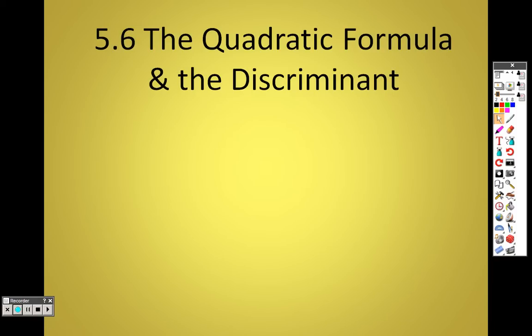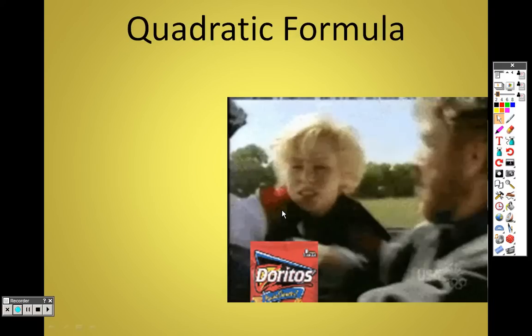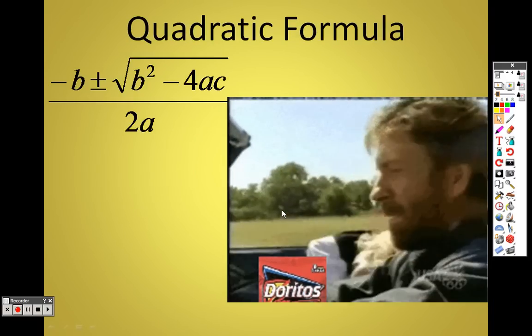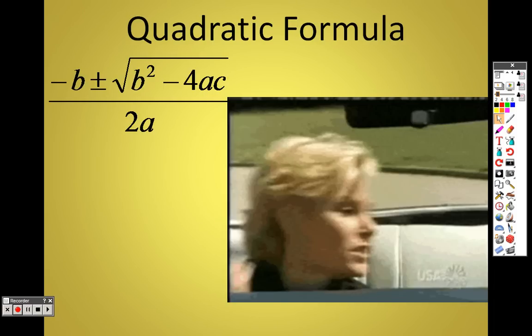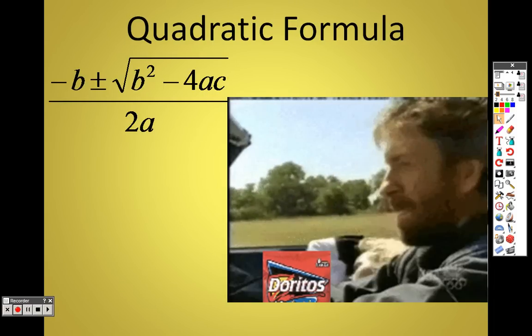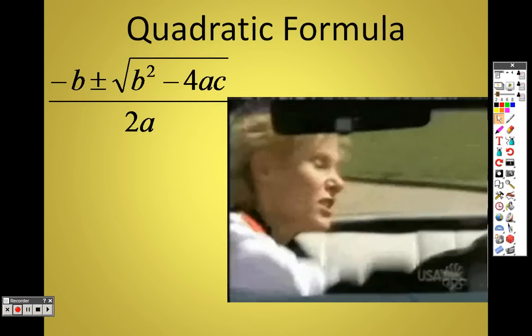5.6, the quadratic formula and the discriminant. So let's take a look here and see what we have. The quadratic formula is this: negative b plus or minus the square root of b squared minus 4ac over 2a. What is the quadratic formula? What is it used for?